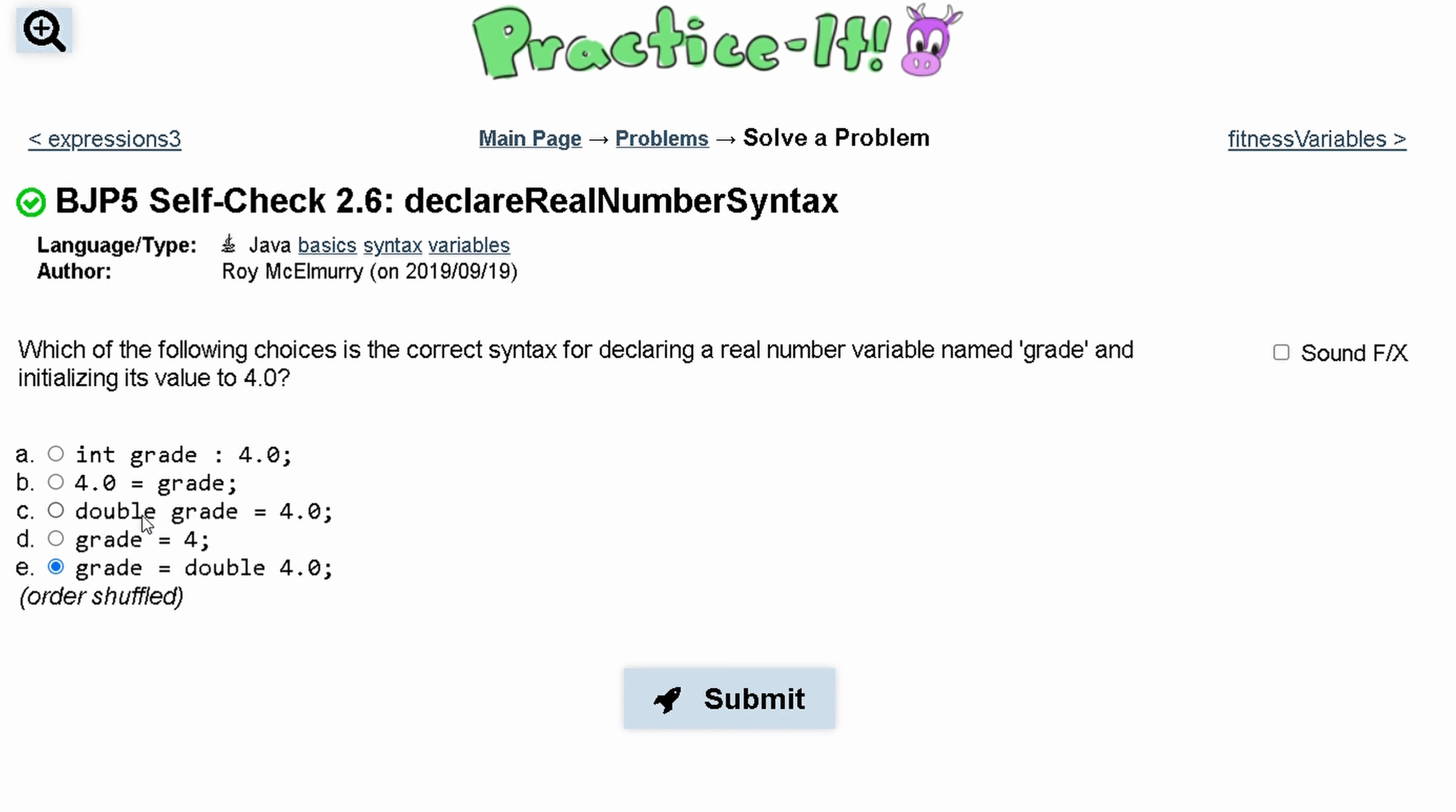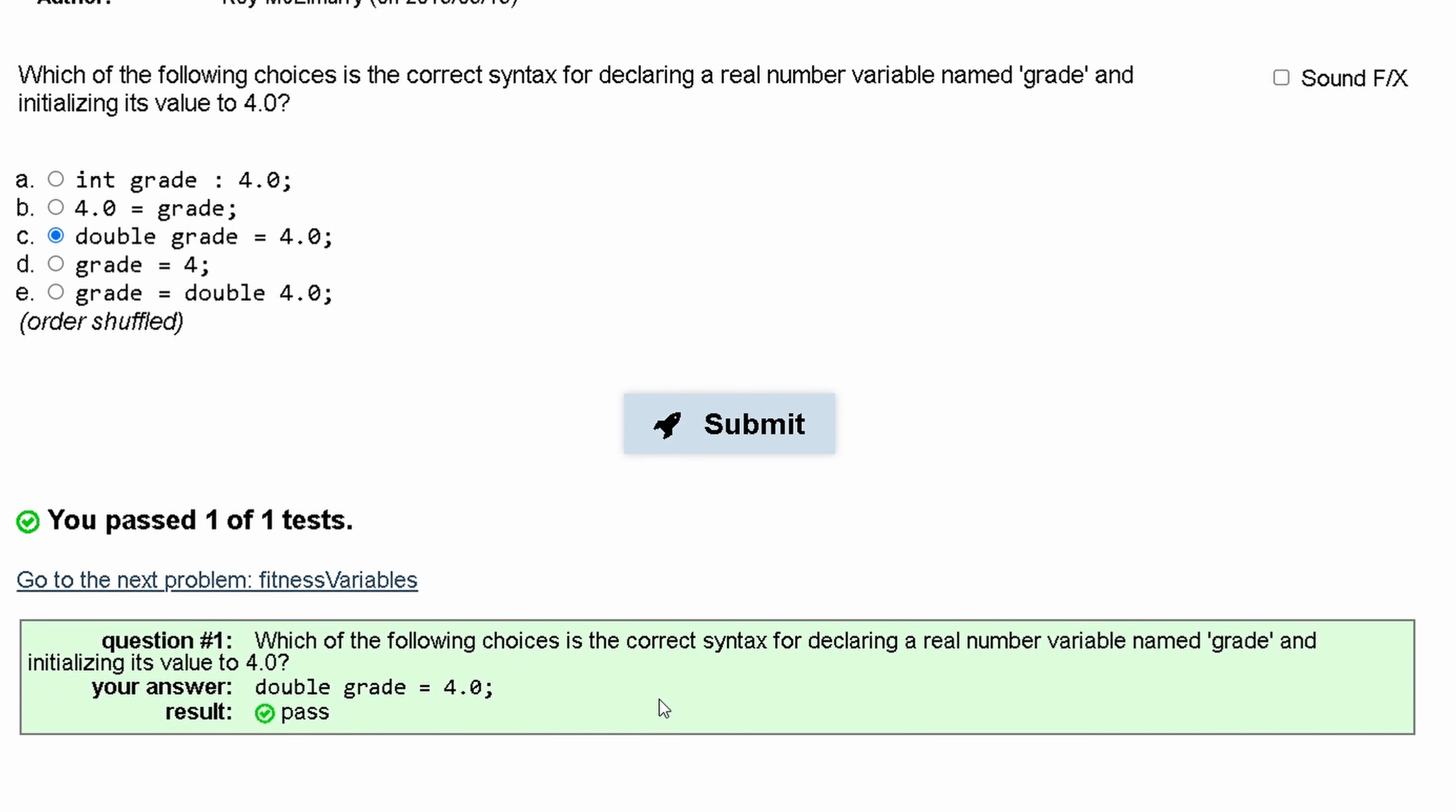And declaring a double is just like declaring an int. So you need the type and then the name and then equals whatever it's equal to. So that means C is the only correct answer.